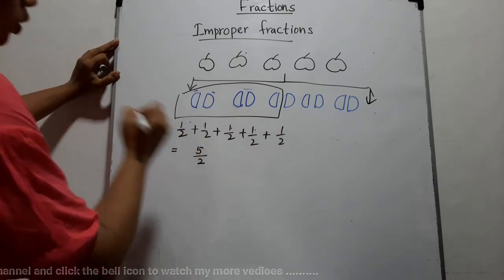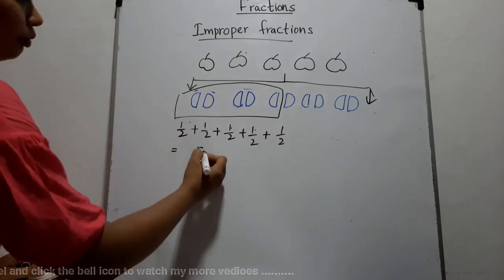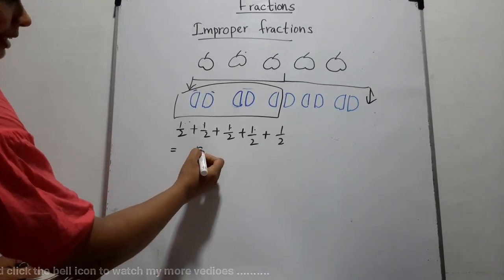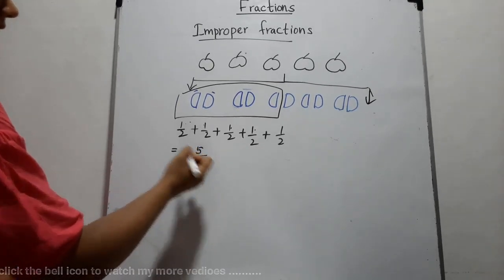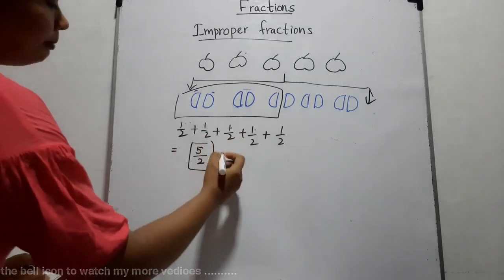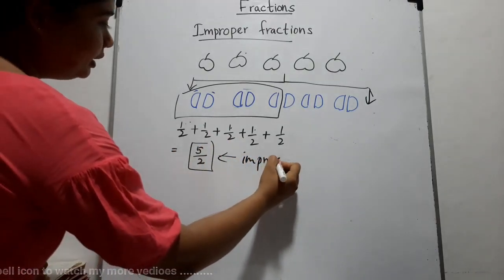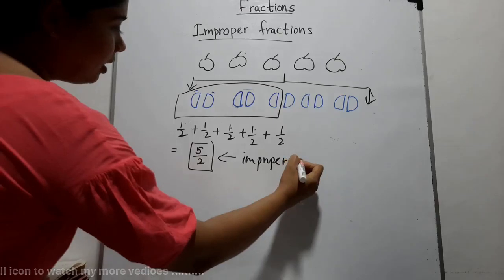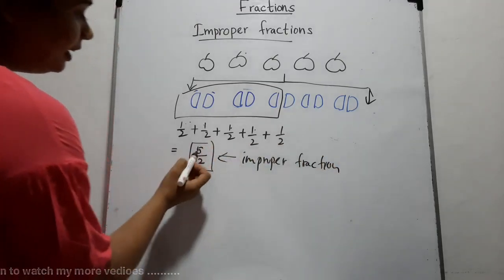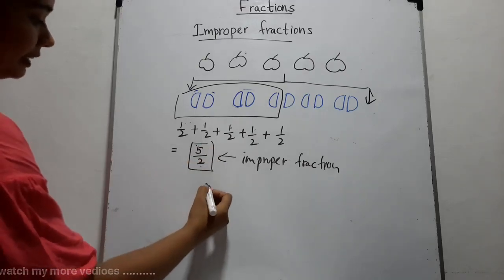Five over two — we can express five apples as five halves, which is an improper fraction. Such fractions are called improper fractions. The numerator is greater than the denominator.